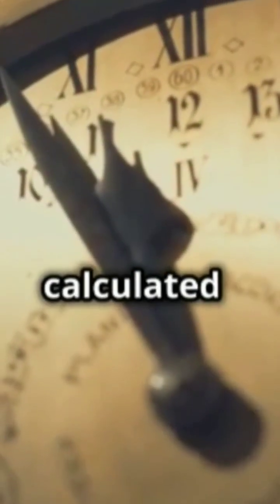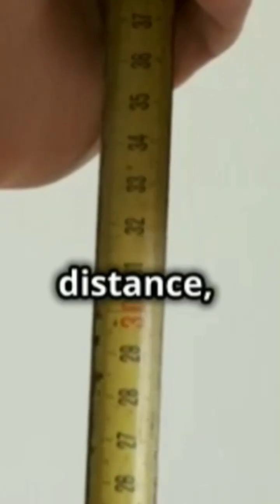The speed of light can be calculated using S equals D divided by T. Where S is speed, D is distance, and T is time.